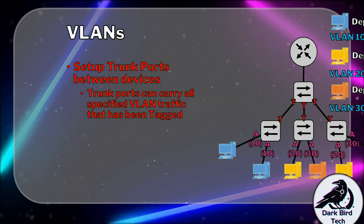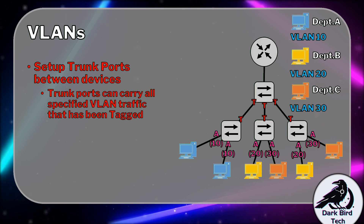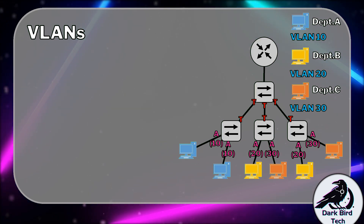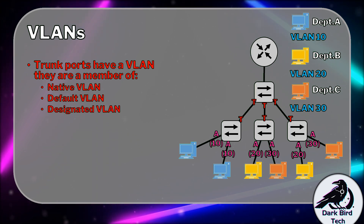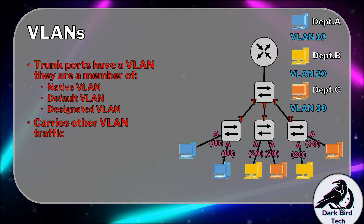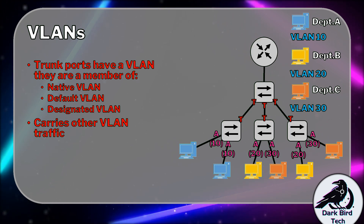Picking up from a point in module 12, where we spoke about setting up the trunk ports — trunk ports will carry all specified VLAN traffic that has already been tagged. For the trunk ports to do this, they're going to have a VLAN that they are a member of. So when traffic arrives on those access switches and those access ports apply a tag, that traffic travels across the trunk port with its tag or label on it.